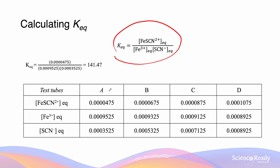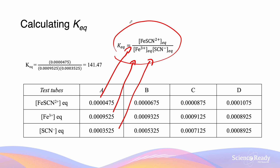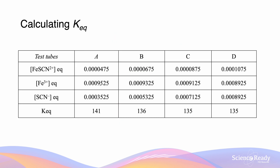We can substitute the equilibrium concentrations into our Keq expression to calculate what our Keq is. For solution A, the product concentration, the Fe³⁺ concentration, and the SCN⁻ concentration at equilibrium are plugged in, giving a Keq value of 141.47. We can do the same for B, C, and D, ending up with values of 136, 135, and 135.